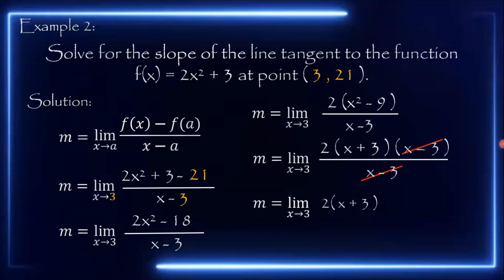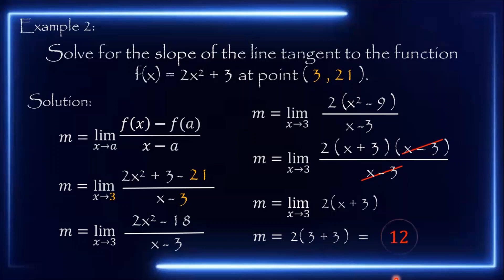Using direct substitution with x = 3, we have 2 times the quantity (3 + 3). Applying order of operations, we evaluate inside the parentheses first: 3 plus 3 equals 6, then 6 times 2 equals 12. So the slope of the line tangent to the function is 12.